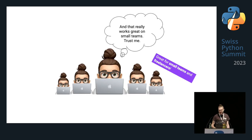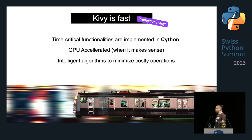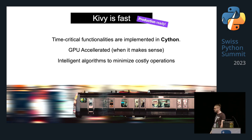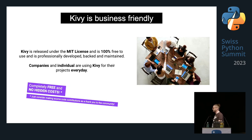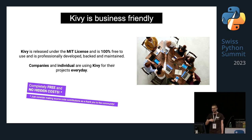Kiwi is also fast, because time-critical functionalities are implemented in optimized code. It's GPU-accelerated when it makes sense, and implements intelligent algorithms to minimize the cost of operations — meaning it's production-ready. Kiwi is also business-friendly: it's released under the MIT license and is 100% free to use, with professional development and maintenance. Companies and individuals are using Kiwi for their projects every day, completely free with no hidden costs.